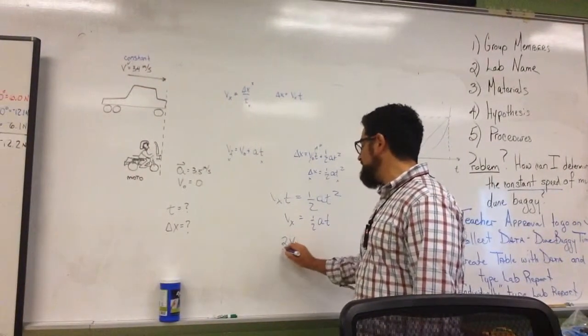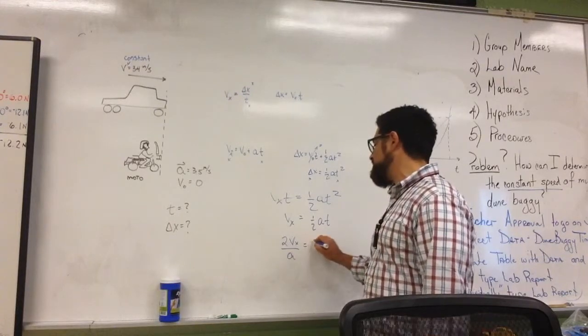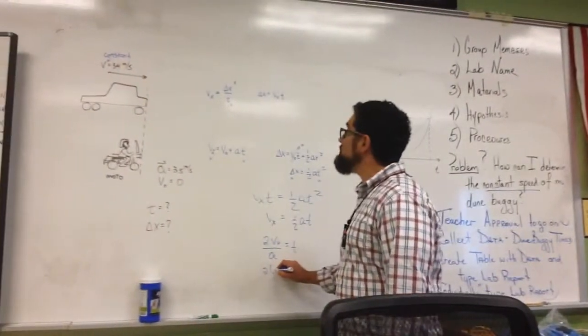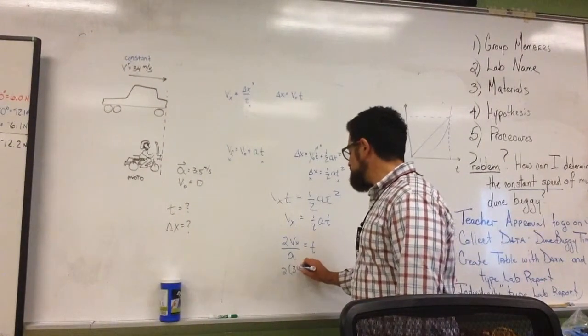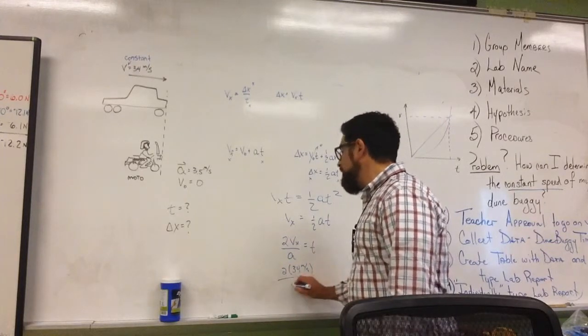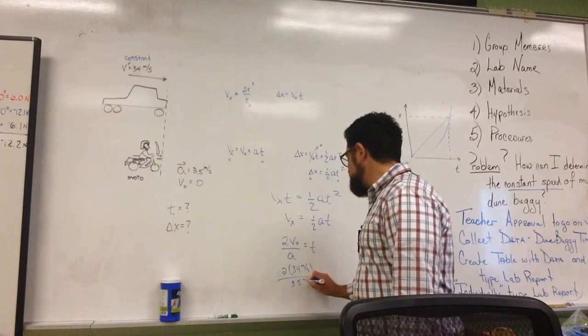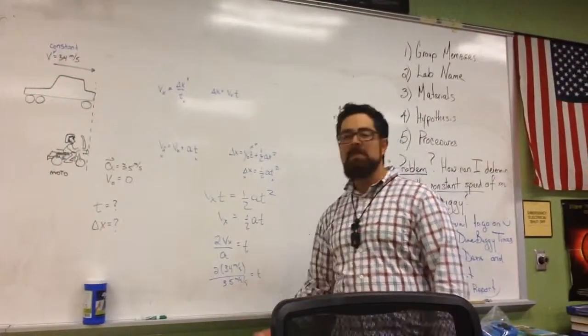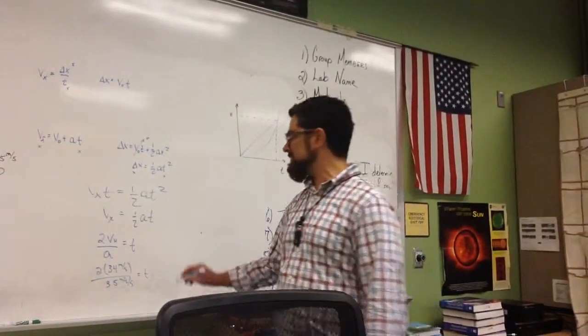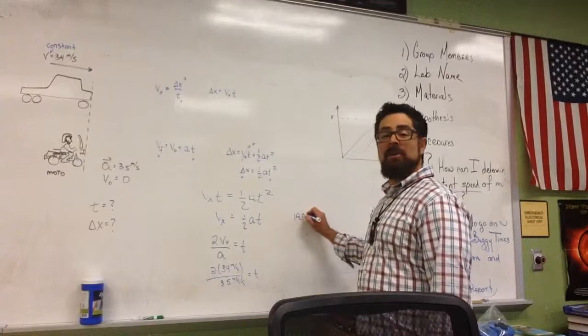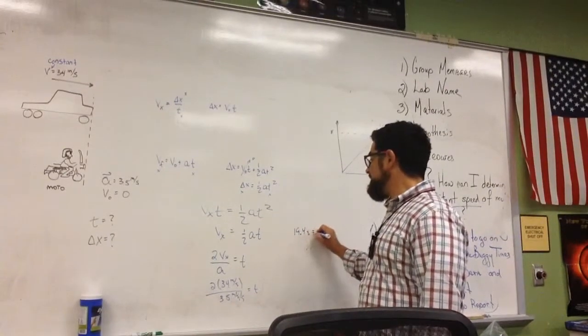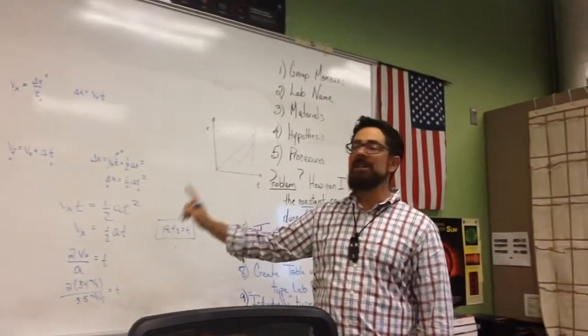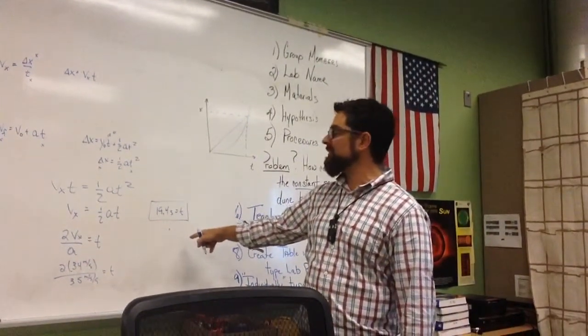I get 2 times the velocity of the car over the acceleration of the motorcycle is equal to the time to that point of intersection. Then I get 2 times 34 meters per second over my acceleration of 3.5 meters per second per second is equal to time. That's going to give me 68 over 3.5, and 68 over 3.5 is 19.4 seconds. 19.4 seconds is the amount of time that it takes this to happen. I would need to truncate that for numerical significance down to 19.